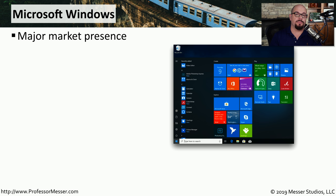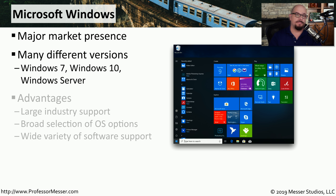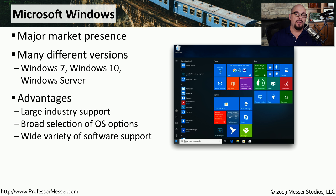One of the most popular operating systems is Microsoft Windows. Not only are there the traditional desktop operating systems such as Windows 7 and Windows 10, but there are also server versions of Microsoft Windows used to manage very large scale applications in the data center. The advantages of Microsoft Windows include huge industry support - most applications are automatically written to run in Microsoft Windows. You also have many different options, with versions designed for home use and others designed for the data center.